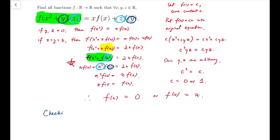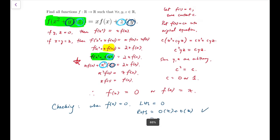So when f is 0, then certainly left-hand side is just 0, while right-hand side is 0 times x plus 0 times z, clearly 0. So check.